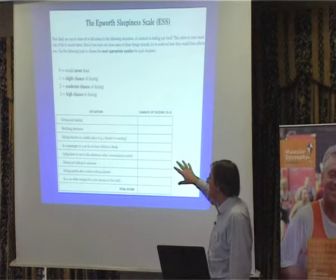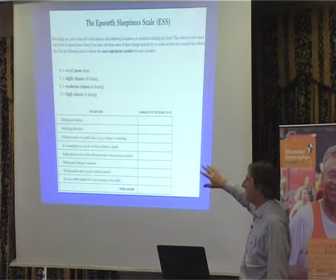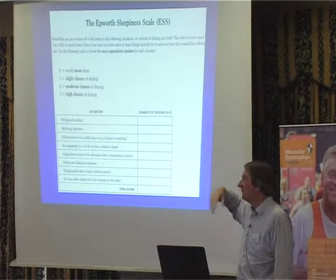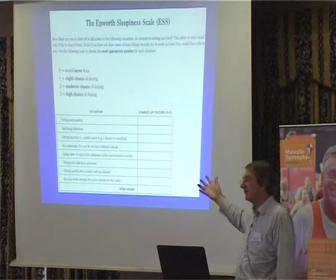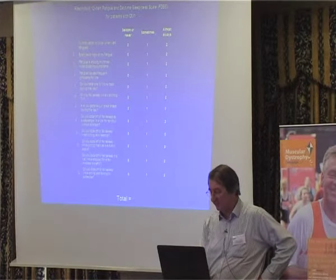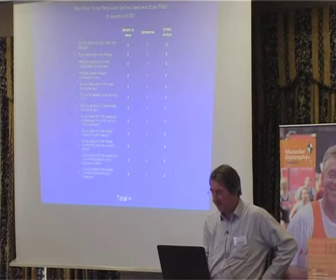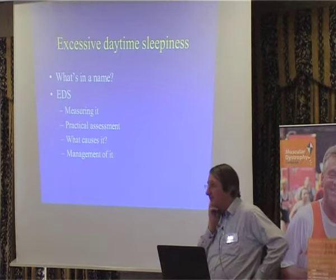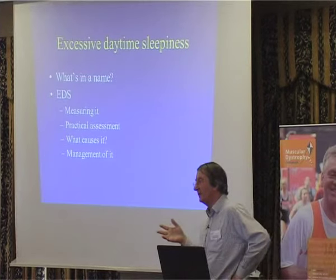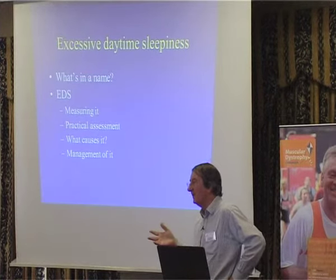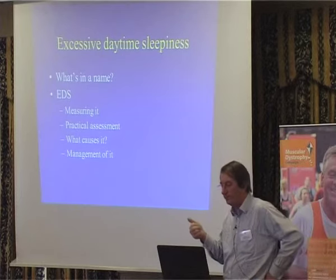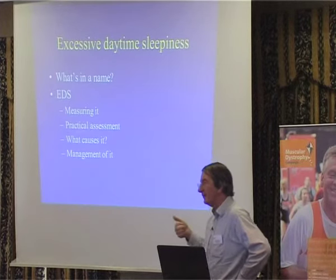The Epworth scale has some limitations for people with myotonic dystrophy, because a couple of the questions relate to what happens when you're in a car driving or as a passenger, and some people with myotonic dystrophy never go out in a car, so they can't answer those questions truthfully. We're looking at other possible ways of assessing sleepiness. But at the end of the day, the easiest way of determining if somebody has excessive daytime sleepiness is simply to ask them: do you fall asleep during the day when you don't want to?